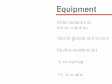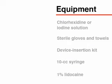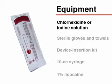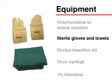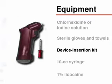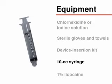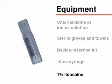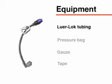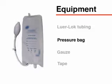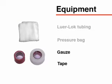The following items should be assembled in preparation for the drill-based insertion: chlorhexidine or iodine solution for site preparation, sterile gloves, sterile towels for draping the site, a device insertion kit for mechanical insertion, a 10cc syringe for aspiration and infiltration, a solution of 1% lidocaine for analgesia if the patient is conscious, standard luer lock tubing for the delivery of fluids or medication, and a pressure bag if large volumes of fluids need to be administered through the intraosseous system, and gauze and tape for securing the device.